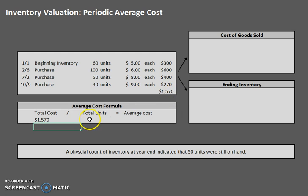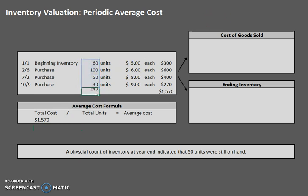Now we need our total units, which is going to be very similar. We have 60, 150, and 30 units. If we add those up you will see that we have 240 units.